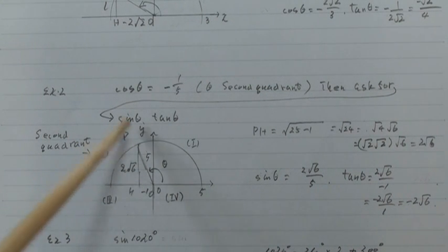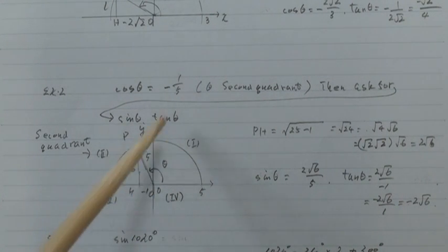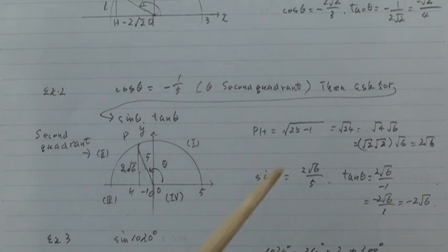This is y, and the P coordinate is minus 1, 2 times root 6. Then by definition, tan theta equals y over x. Then this is.